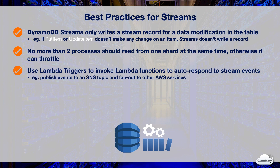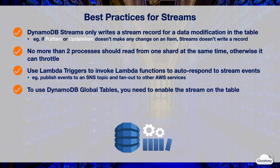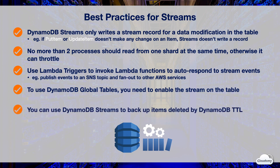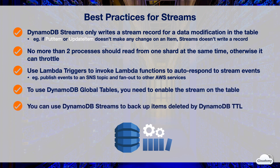You can use Lambda triggers to invoke Lambda functions to automatically respond to stream events — for example, publishing stream events to an SNS topic and sending notifications to other AWS services. To use DynamoDB global tables, you need to enable the stream on the table, as global tables replicate items and ongoing changes across regions via DynamoDB Streams. When using DynamoDB TTL, you can enable DynamoDB Streams to back up expired items deleted by TTL.